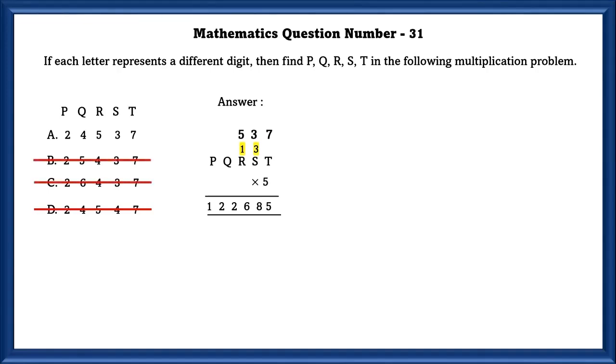So 5 times 5 is 25 plus 1, that is 26, carry forwarding 2. The only option left is A. So Q can be 4. So 5 times 4 is 20. 20 plus 2 is 22, and then carry forwarding 2. 5 times 2 is 10. 10 plus 2, that is 12. So the correct option is the A option.